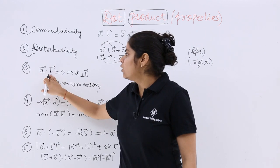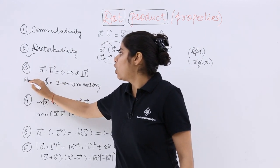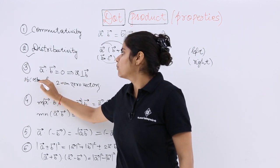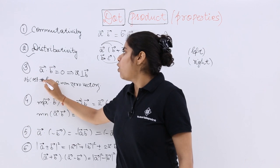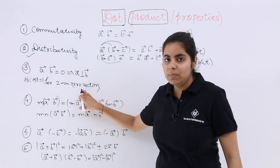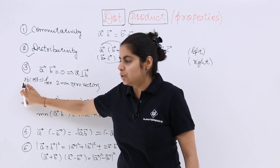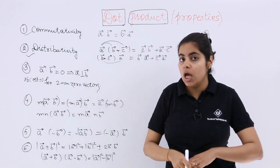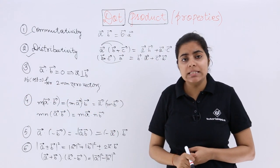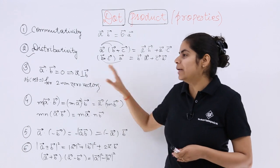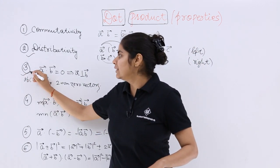How is that possible? A dot B equals 0 means AB cos theta equals 0. Now, it's already given that A and B should not be 0. So these are non-zero. That means cos theta is 0. Cos theta equals 0 means theta equals 90 degrees, hence perpendicular. So this is also very clear, I suppose.